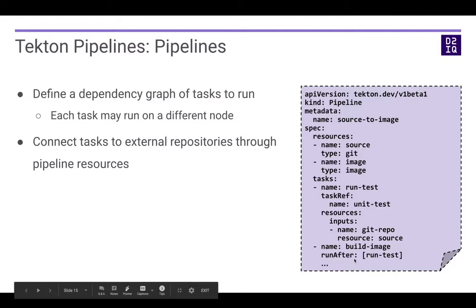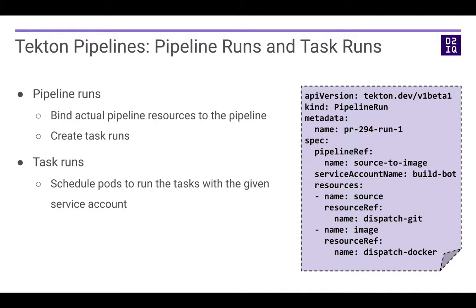Finally, Tekton has pipeline runs and task runs. Tasks and pipelines just declare what to run. When you want to run an actual task or pipeline, you need to create a task run or pipeline run. When you create a pipeline run, it binds the actual pipeline resources to the pipeline you declared and creates task runs. The task runs are the ones that trigger the scheduling of pods to run the contents of the tasks.